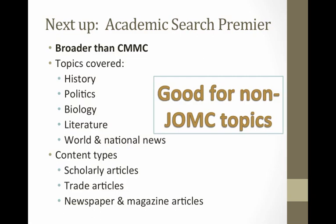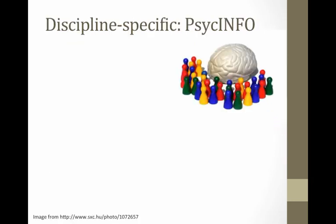Academic Search Premier is really good for non-journalism topics. It does include some journalism material, but you should start with CMMC, and then if you want more, broaden out to Academic Search Premier. If you want to narrow down, there are some discipline-specific resources, and PsychInfo is the one that I think most of you would use.